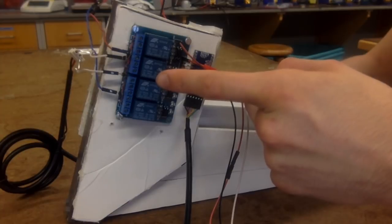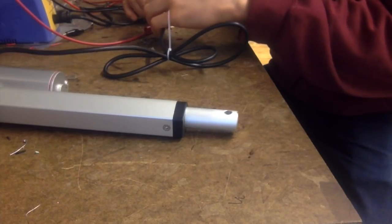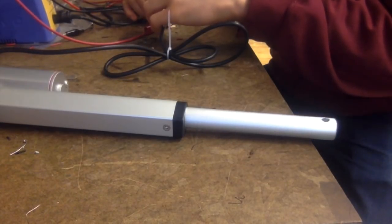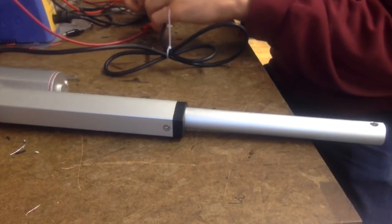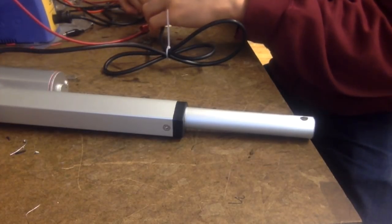Alright, so let's get started on the build. This is a linear actuator. When a voltage is put across the leads, the stroke extends. When we switch the polarity, the stroke retracts.